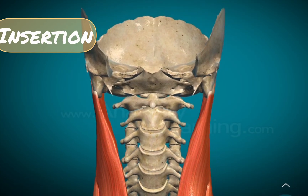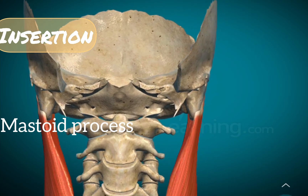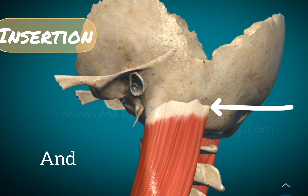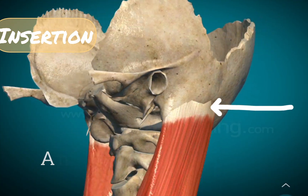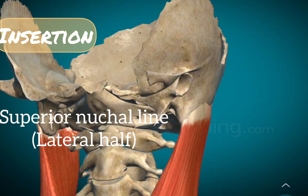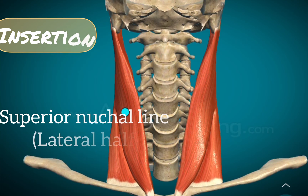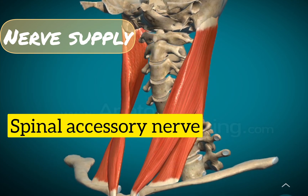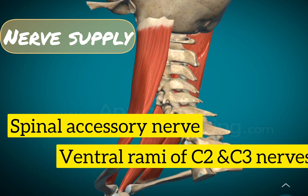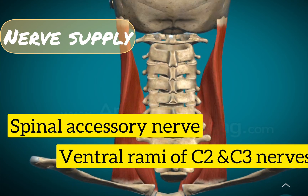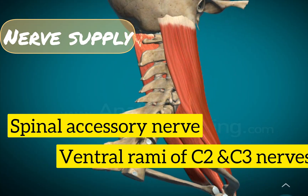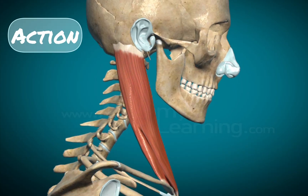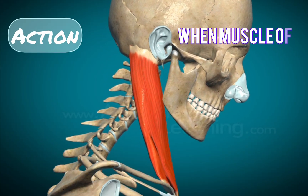It gets inserted into the mastoid process and the lateral half of the superior nuchal line. The nerve supply is by the spinal accessory nerve and the ventral rami of C2 and C3 nerves.